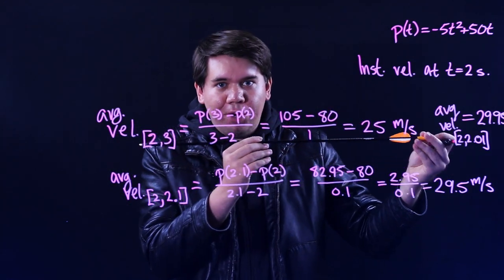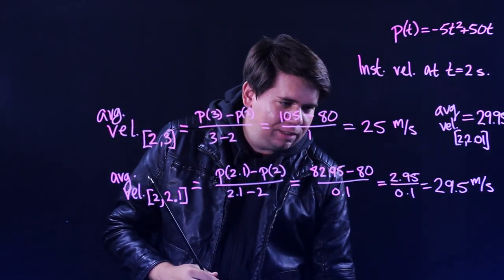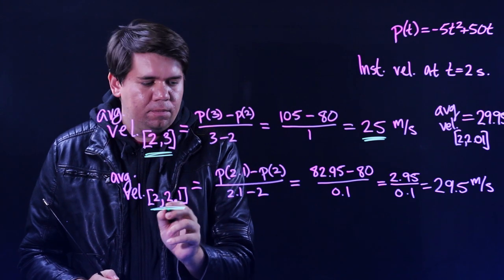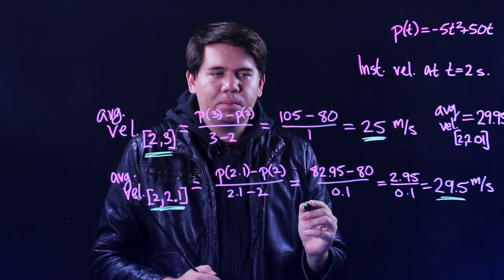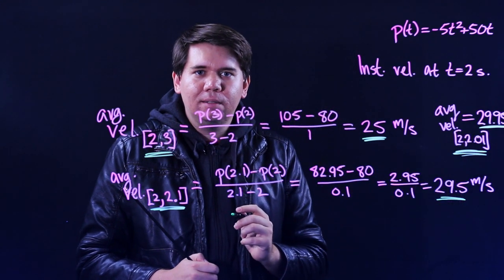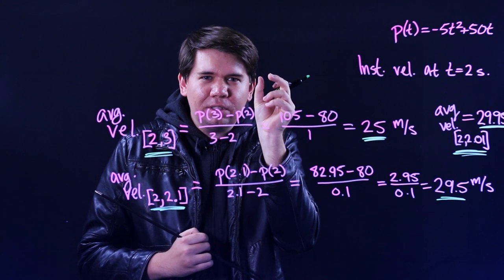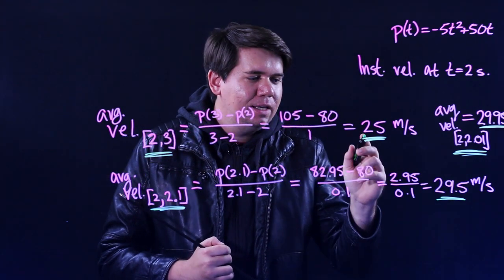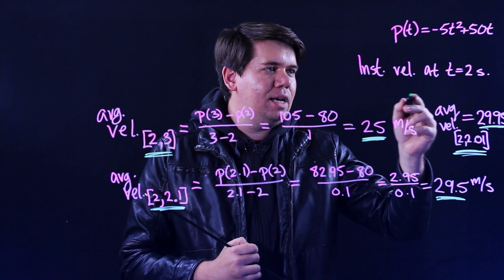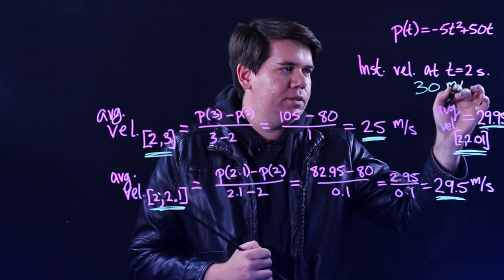You could zoom in even closer from 2 to 2.001. And you can work it out. And you might make a guess, it seems like, when you're shrinking this interval to make it shorter, it went from 25 meters per second to 29.5 meters per second, shrinking it even more, 29.95 meters per second. Well, then you can ask, is there some trend? What is happening as we make the intervals of time shorter and shorter and shorter? It seems like these numbers are getting closer and closer to 30. It seems like this instantaneous velocity is going to be 30 meters per second.